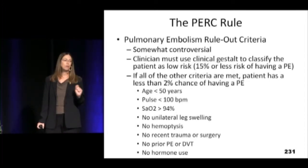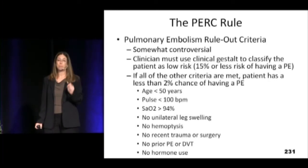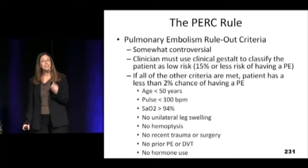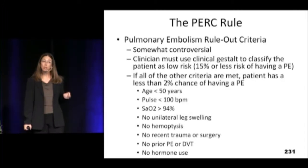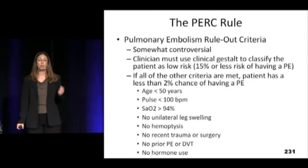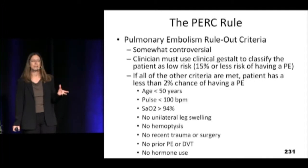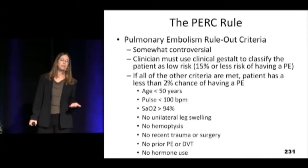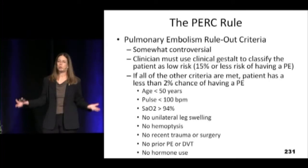The key to the PERC rule: never use it in somebody who is intermediate or high risk — it wasn't intended for that group. But you can use it for the low-risk group and it's wonderful. You will still miss about 1.7 percent of PEs, but those people clinically did fine. They weren't people who went home and dropped dead. This actually takes out about 30 percent of patients you might otherwise work up. Low risk clinically, negative PERC rule — all eight criteria met — you're done.